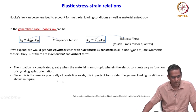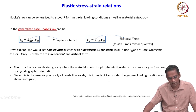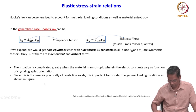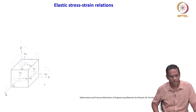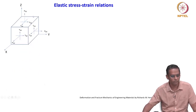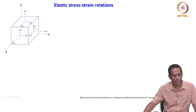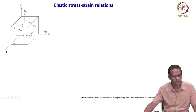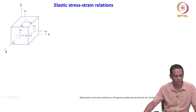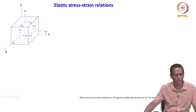Since this is the case for practically all crystalline solids, it is important to consider a general loading condition as shown in the figure. This figure is most familiar to you now. This is the general case where we describe the state of stress in three dimensions, with three mutually orthogonal normal stresses and shear stresses marked on the respective planes.